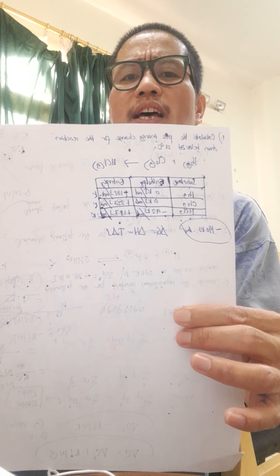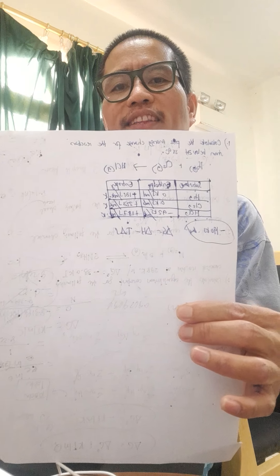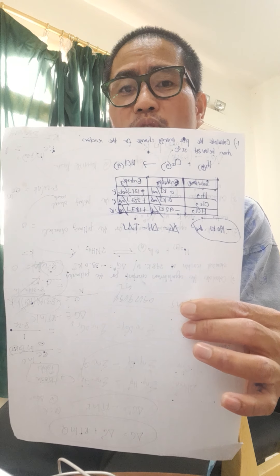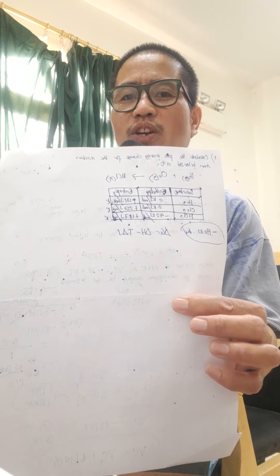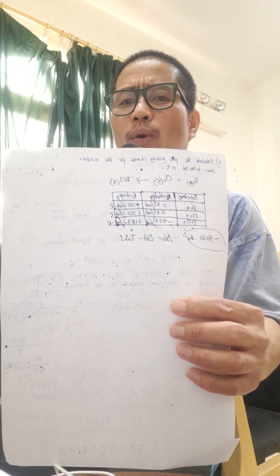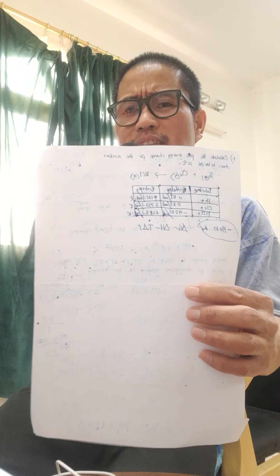Calculate the free energy change for the reaction shown below at 25 degrees Celsius. We have the reaction of hydrogen gas plus chlorine gas to produce hydrochloric acid. We need to balance the chemical equation before proceeding. We can identify the kind of reaction after we solve the change of free energy using the data of enthalpy changes and entropy changes of the reactants and the products.